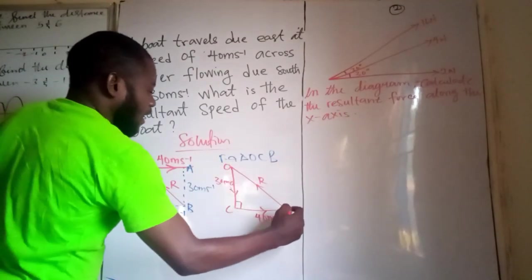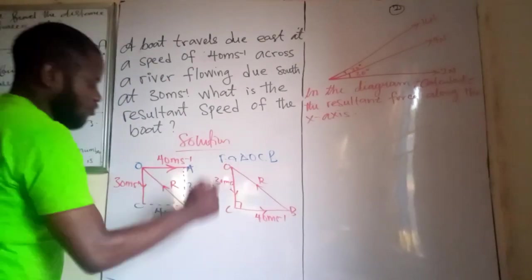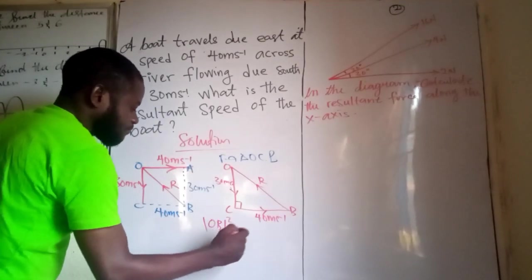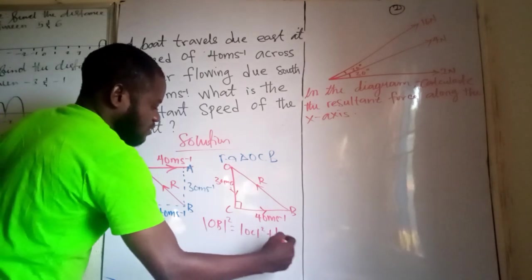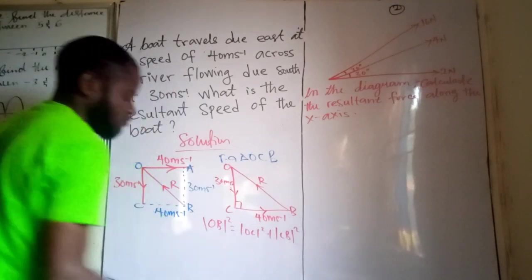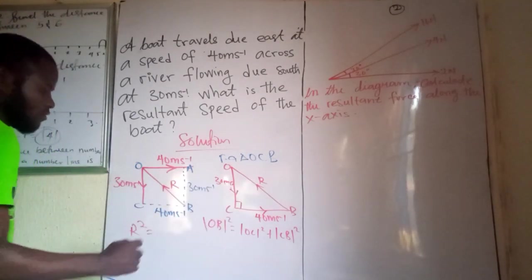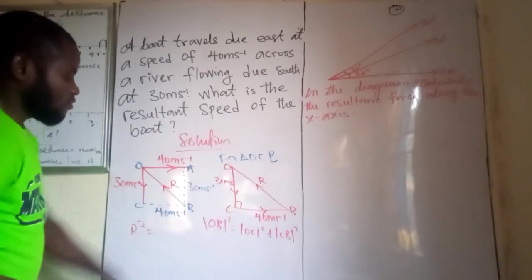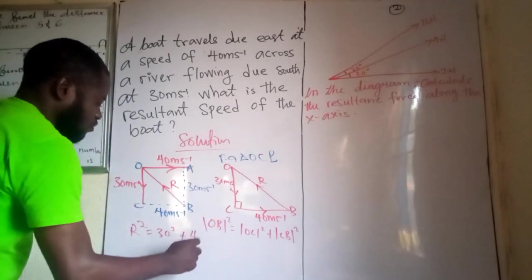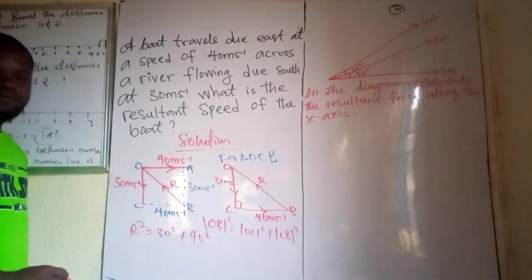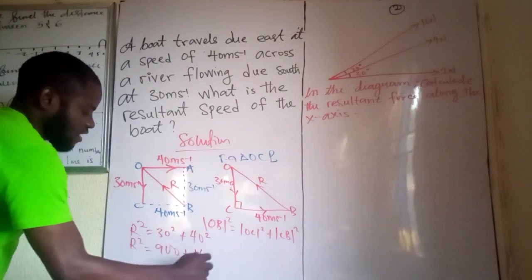So here is O, here is C, and here is B. So the hypotenuse is wherever the right angle is facing. So we have that OB square will equal OC square plus CB square. So if that should be the case, OB is R. So we have R square to equal OC, which is 30. So we have 30 square plus CB, which is 40. So that's 40 square.